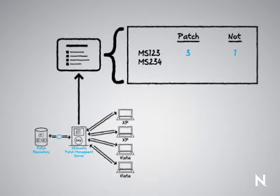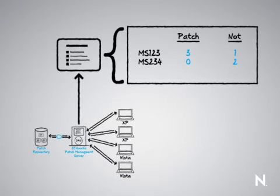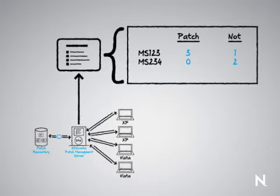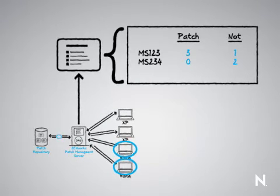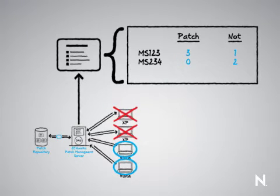You as an administrator then have a nice report that says, for each patch — for instance MS-123 — there are three machines that have that patch and one machine that does not. For MS-234, there are two machines that do not have that patch and no machines already patched. The reason for that would be that MS-234 may be a patch that only applies to Vista machines, so XP devices won't show up because it's not applicable. This ensures your reports are valuable to you.